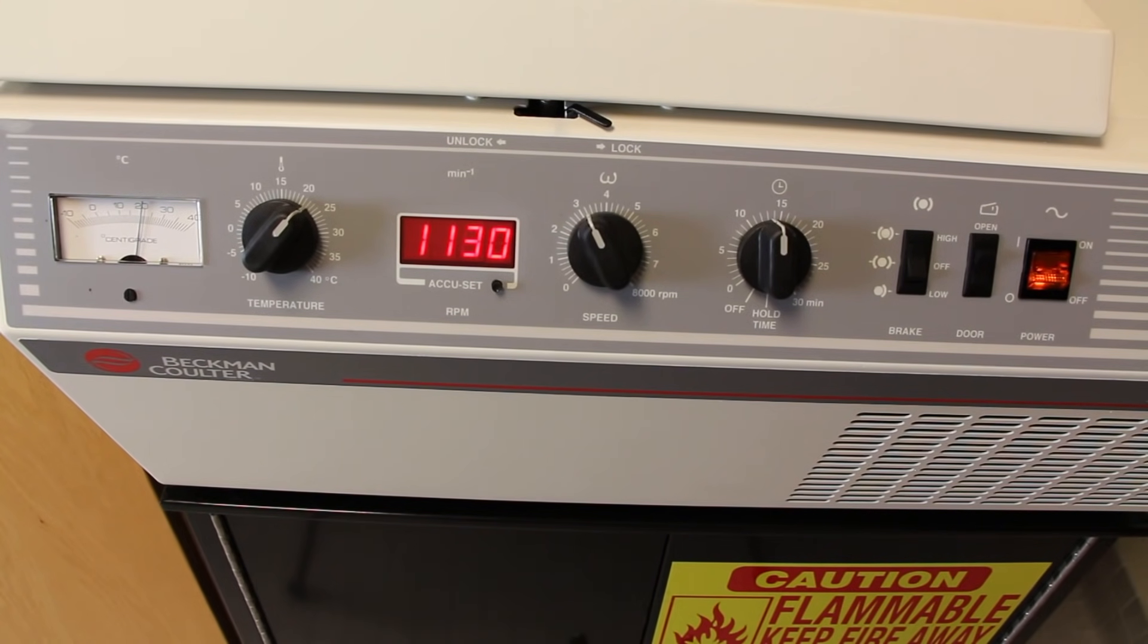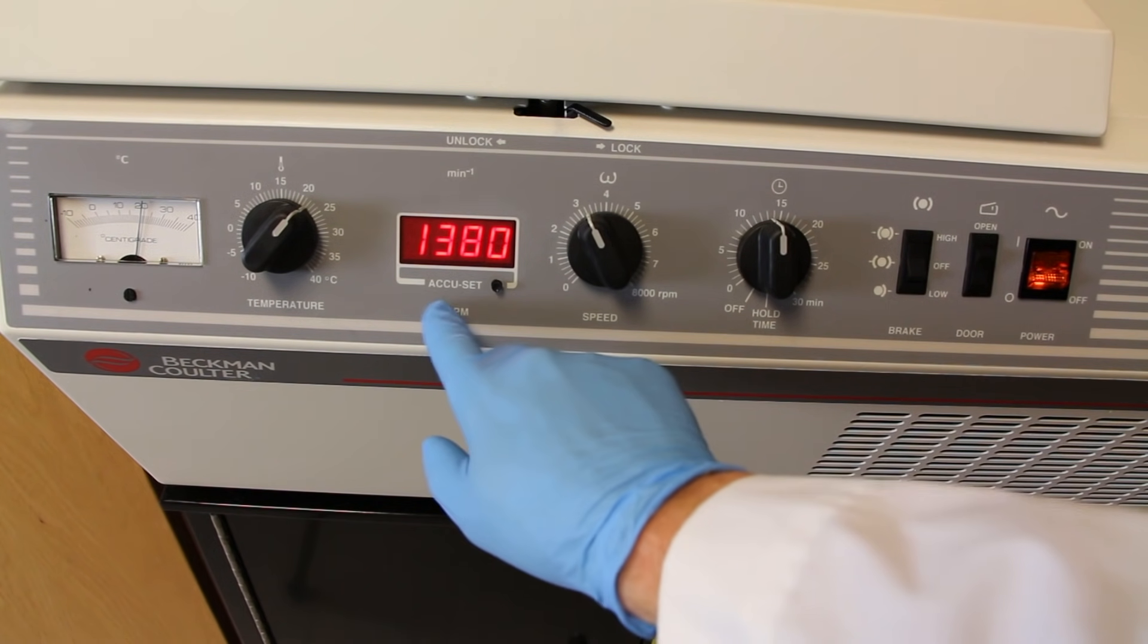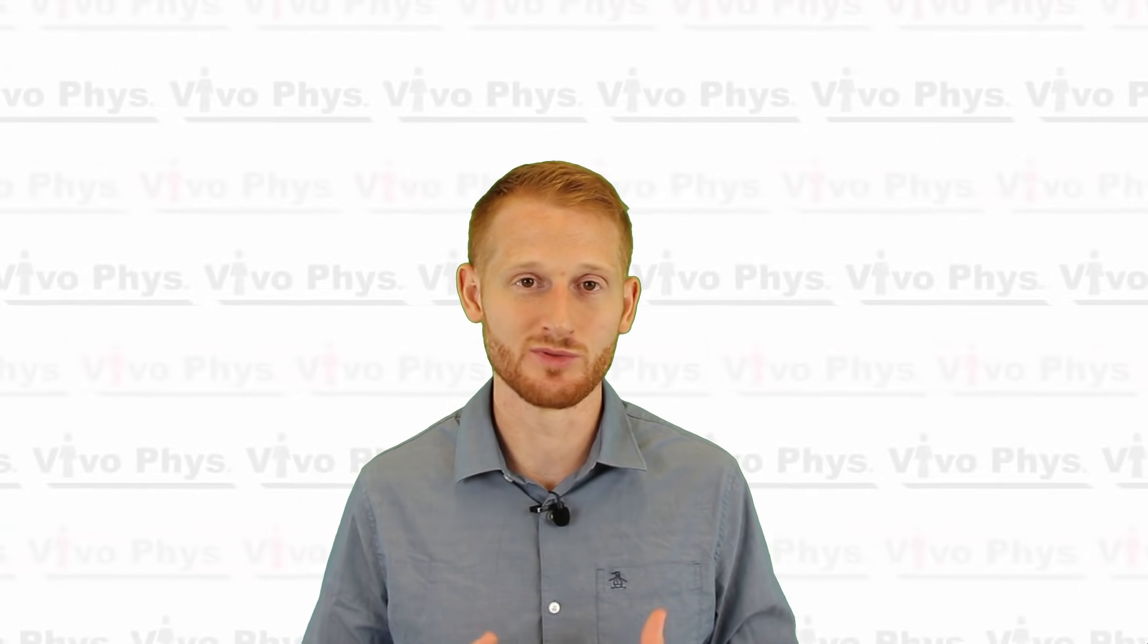You're going to see a very slow increase in the RPMs of the device because it doesn't want to start super quickly. It's going to sort of ramp up and that's going to prevent too much jostling of the blood inside the tubes, which is something you don't want. You don't want the tubes being jostled around because it's going to increase the likelihood of damaging the sample.